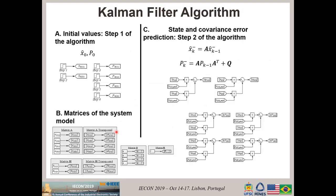These are the blocks for the equations. We have the initial values, step one of the algorithm, and the matrices of the system model. This is valid for a second order Kalman filter. Here we have letter C as the state covariance error prediction, which is step two of the algorithm. Notice that we can clearly see the transposal, matrix transposal, and how the matrices are multiplied and summed. This is quite simple.